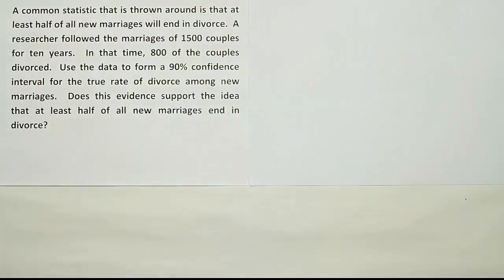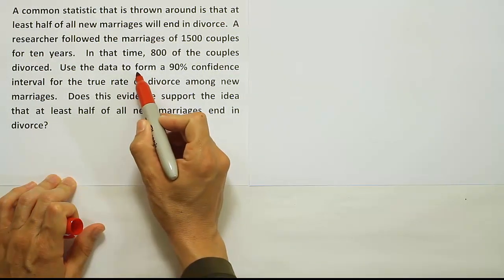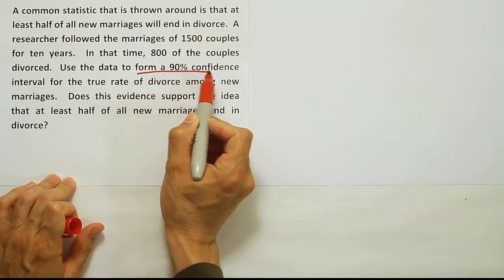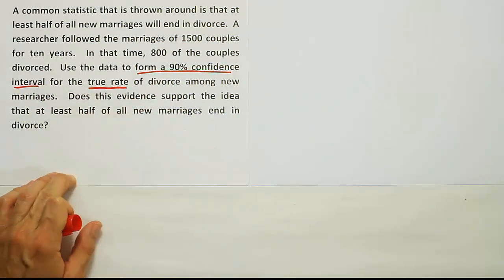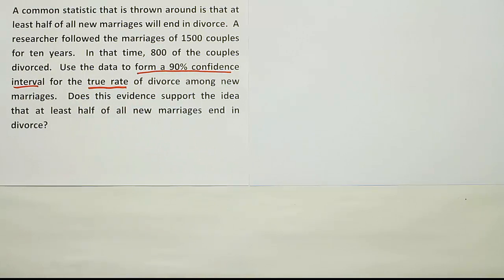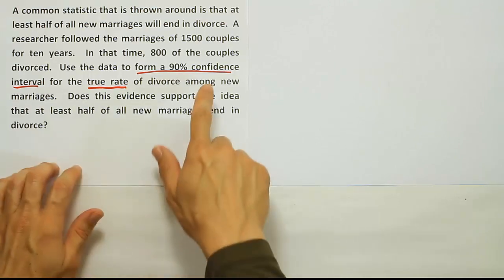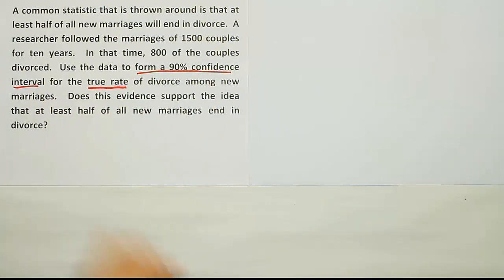Let's identify the phrase that's important here up front. It says that we want to form a 90% confidence interval for the true rate of divorce. So true rate is another way to say the true percentage or the true proportion. So this is a confidence interval for proportion. At that point, we want to go ahead and start our four steps.